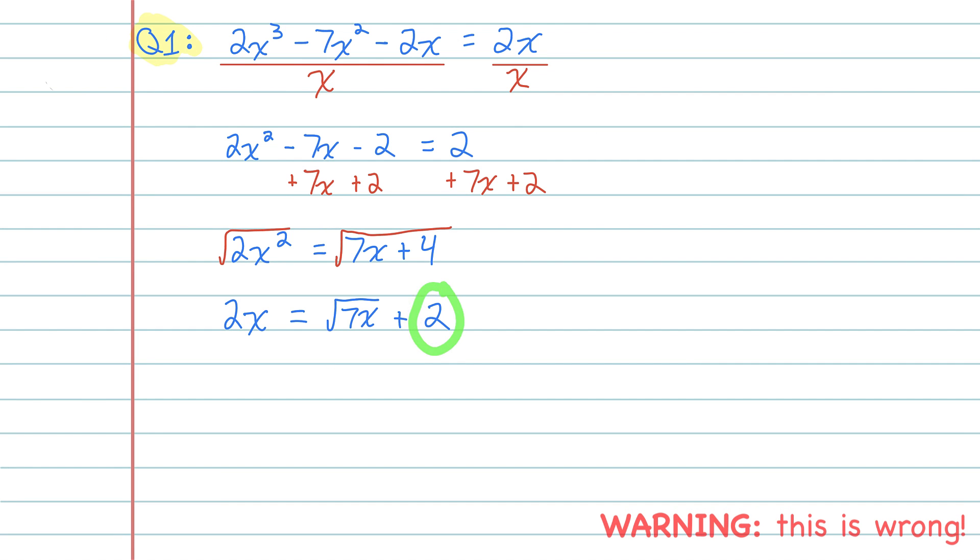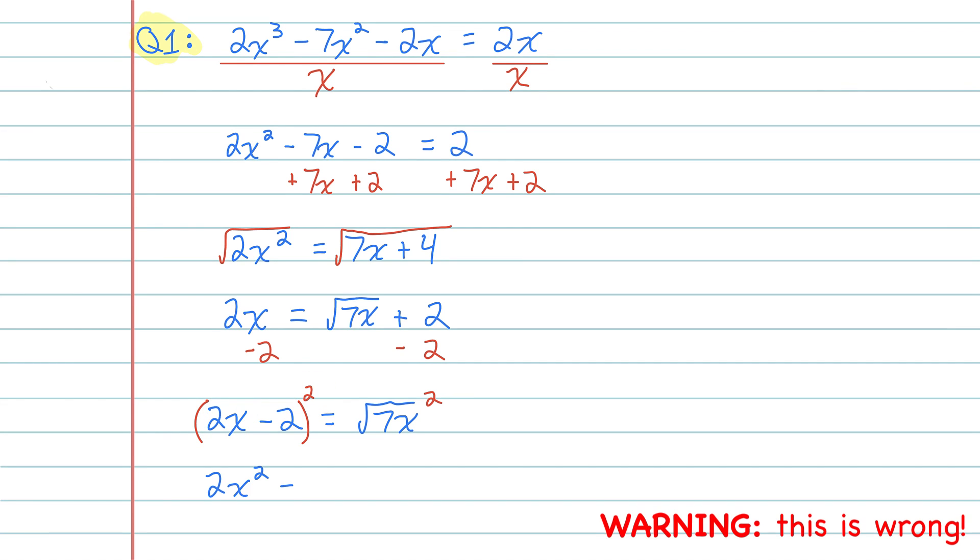The next thing I'm going to do is take this 2 and move it to the other side of the equation, doing an inverse operation. So I'll subtract 2 from both sides, and I now have 2x - 2 equals the square root of 7x. This x seems to be stuck underneath the square root, so I need to get rid of that square root. I can do the inverse of square rooting, which is squaring, so I'll make sure to do that to both sides of the equation. On the left, I've got 2x squared minus 2 being squared, which is 4. And on the right side, the square root and the squared cancel out, leaving me with just 7x.